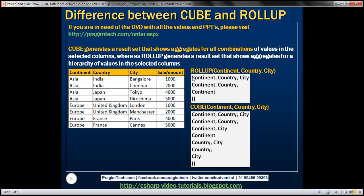If we use ROLLUP on those three columns, and the aggregation we want to perform is sum on the sale amount column, then this ROLLUP is going to produce: sum of sale amount grouped by all three columns — continent, country, and city; sum of sale amount grouped just by continent and country; sum of sale amount grouped just by continent; and the grand total. So we are getting that aggregation based on the hierarchy relationship between those three columns.